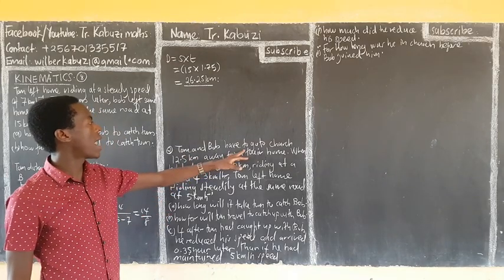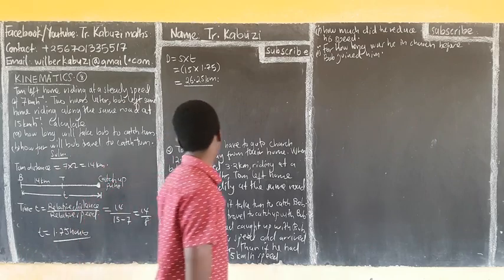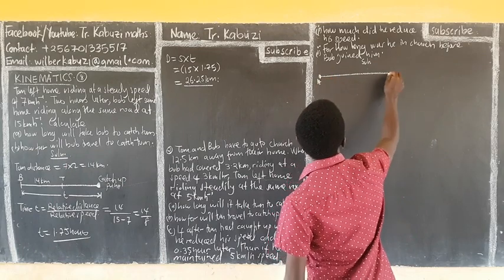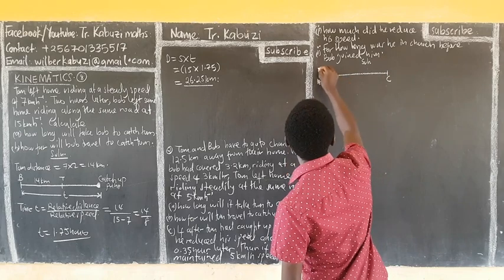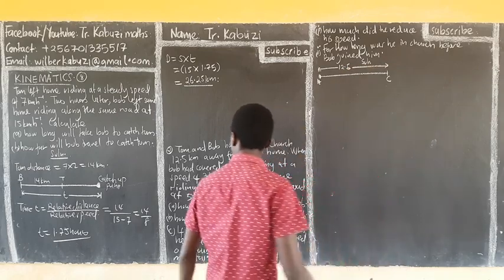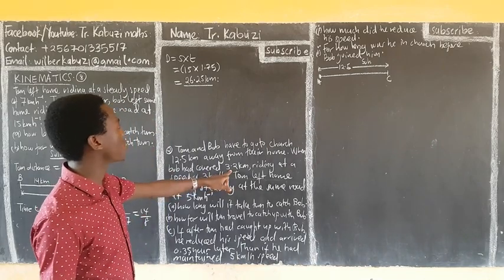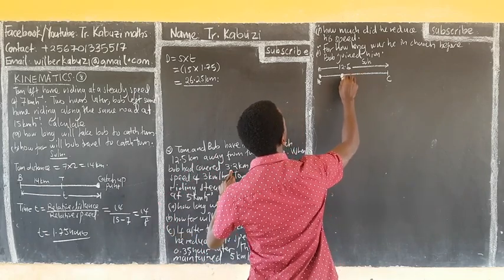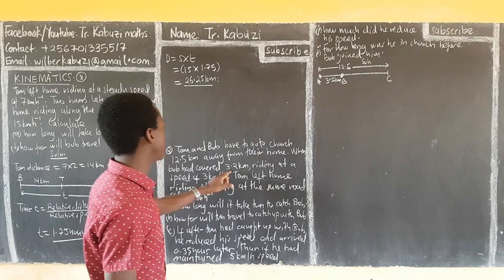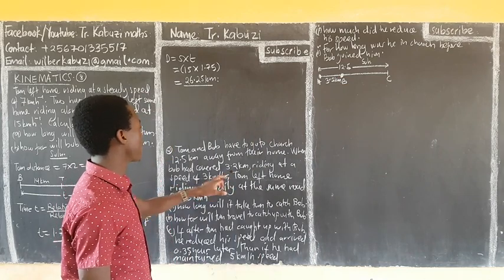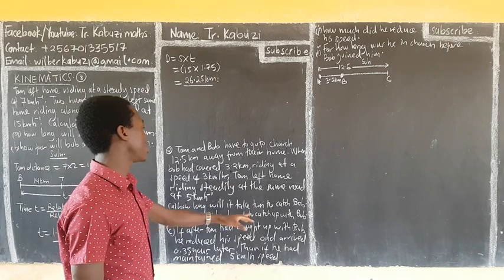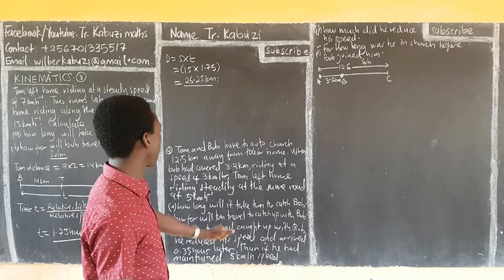Tom and Bob have to go to church 12.5 km away. Let us illustrate: this is their home, and the church is here, it's 4.5 km away. They are telling us that when Bob had covered 3.2 km, riding at a speed of 3 km per hour, Tom left riding at a speed of 5 km per hour. How long would it take Tom to catch up with Bob?